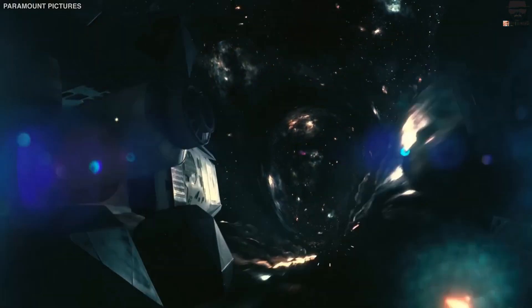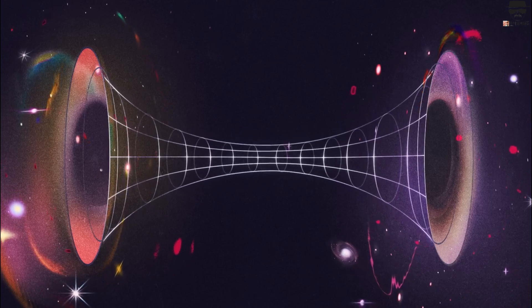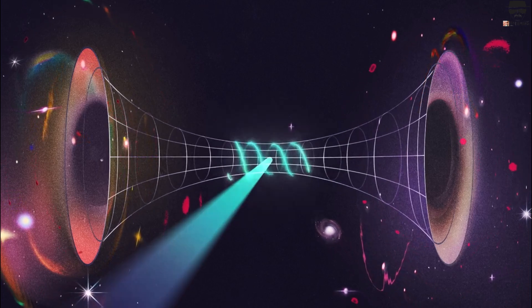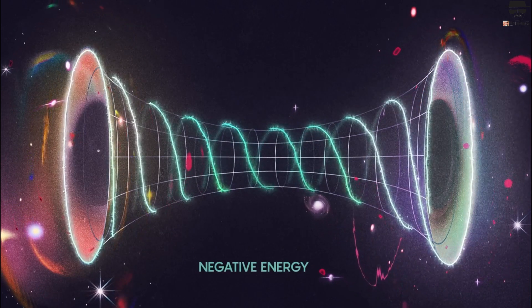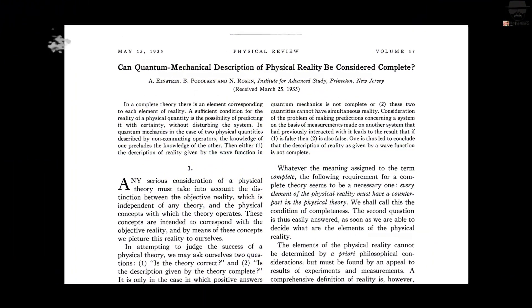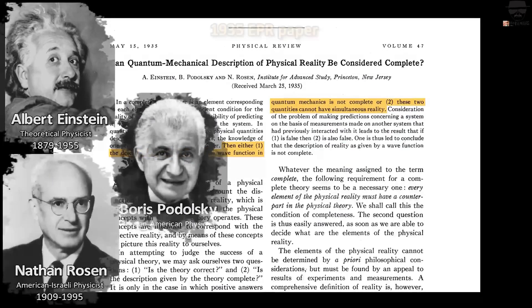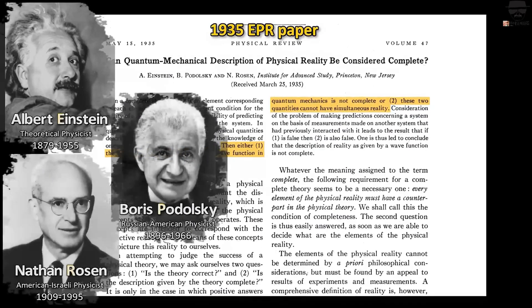While there are many practical problems involved with making wormholes, an especially important one is that they are unstable unless stabilized by large amounts of negative energy. That same year, Einstein and Rosen also worked on a topic in quantum mechanics, this time with another physicist by the name of Boris Podolsky.